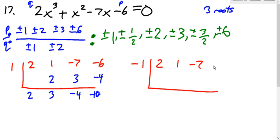So try negative one. Into two, one, negative seven, negative six. That's negative two, negative one, one, negative six, positive six. That is zero. So negative one is one of our three roots.